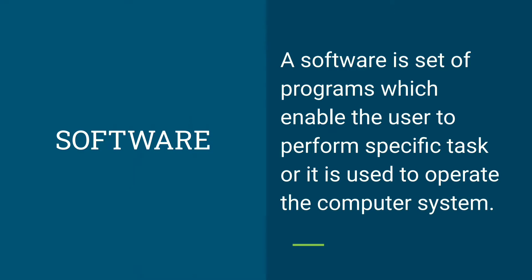Software is used to operate the computer system. The computer system includes hardware parts: monitor, speaker, printer, keyboard, and mouse. This hardware is operated by a set of programs used to perform a specific task or to operate the computer system.